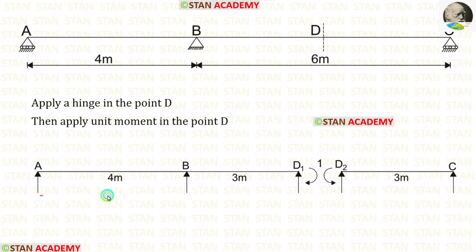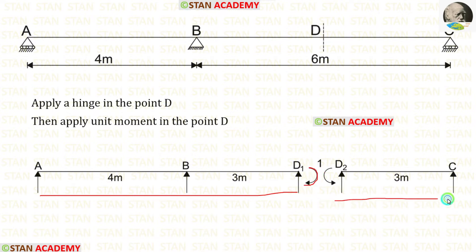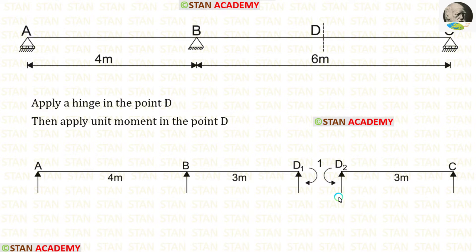For AD1, the unit moment will be acting in the clockwise direction. For D2C, the unit moment will be acting in the anticlockwise direction. Let us take D2C and find the vertical reactions.